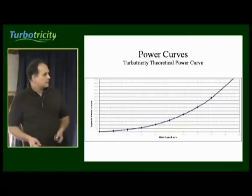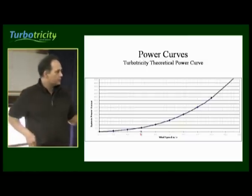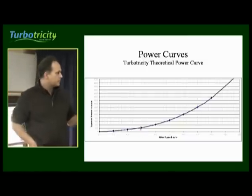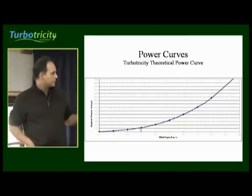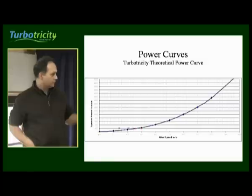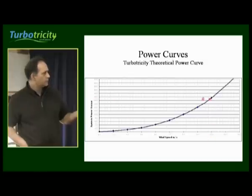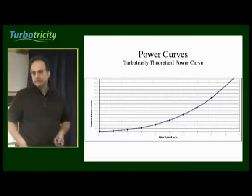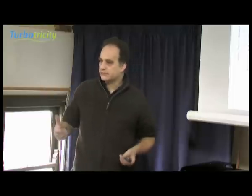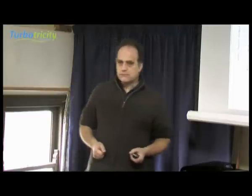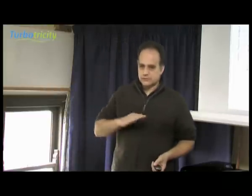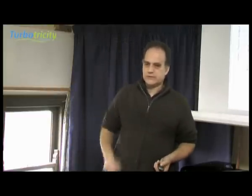You can see that at 5 metres per second, we're producing about 210 to 220 watts. Double the wind speed and it should go up 8-fold — it should be around 1,600 watts, and sure enough, that's the kind of multiples you're looking at. It's a fairly steep curve.